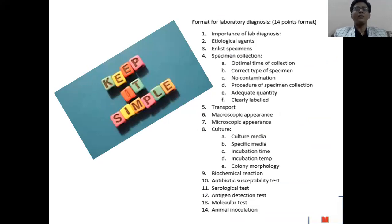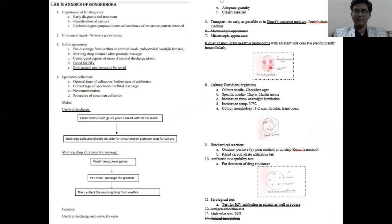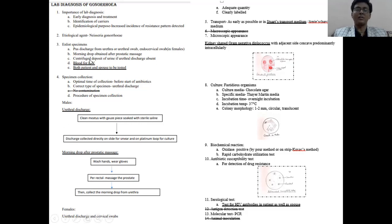Based on the 14-point lab diagnosis format, this picture is in front of you. Although you can see only two pages of lab diagnosis, please note it is point-wise, which can be elaborated by you as per your need. Along with it, a few points are also added which are necessary — for example, in case of Gonorrhea, HIV testing and testing of the spouse is necessary.